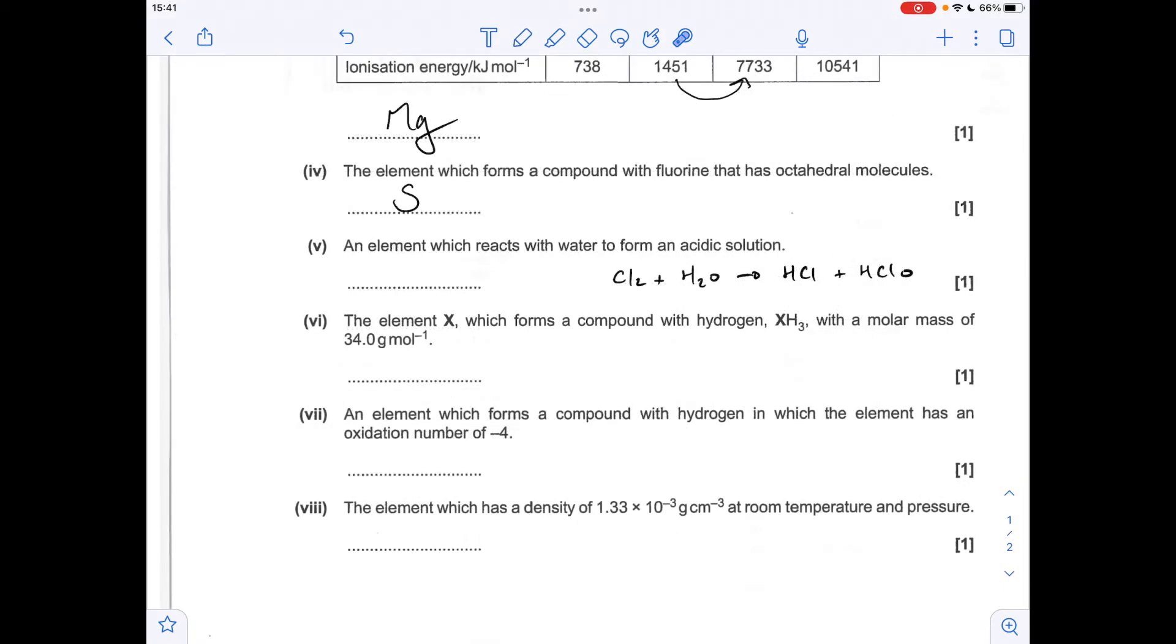Part five, an element that reacts with water to form an acidic solution, so there's a reaction we need to know from the specification, which is a reaction of chlorine with water, so Cl2 plus H2O, HCl and HClO are the product, they're both acids, so the answer is chlorine.